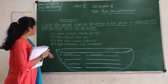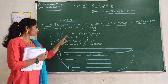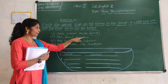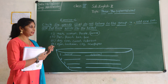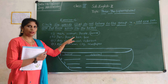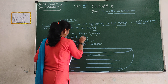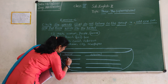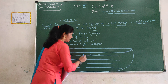Next one: pen, pencil, hen, box. Which one is the odd one out? Pen, pencil, hen, box. The odd one is hen. Hen is an animal. So it's a noun.